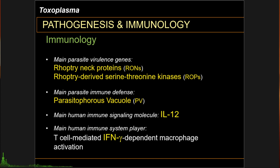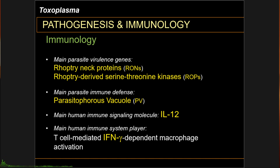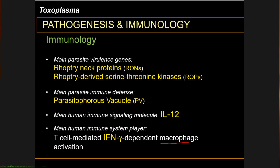Interleukin-12 is mainly secreted by dendritic cells in the lamina propria of the epithelium and is part of the innate immune response. Interleukin-12 also triggers the release of interferon gamma, mainly from CD4 or CD8-positive T cells and also natural killer cells, and this leads to long-term protection of the individual. This is part of the adaptive humoral response. Please take note that the main immune system player that controls Toxoplasma populations in the body would be your macrophages.